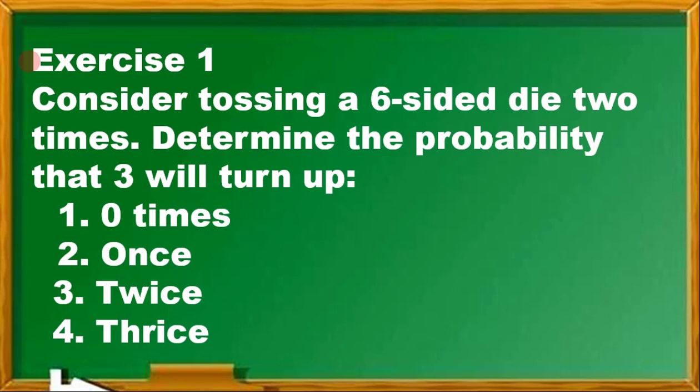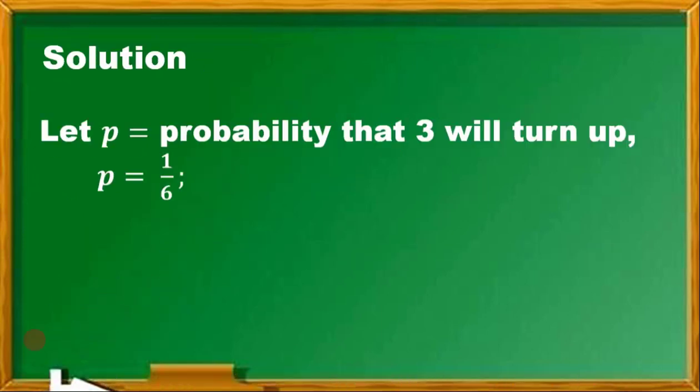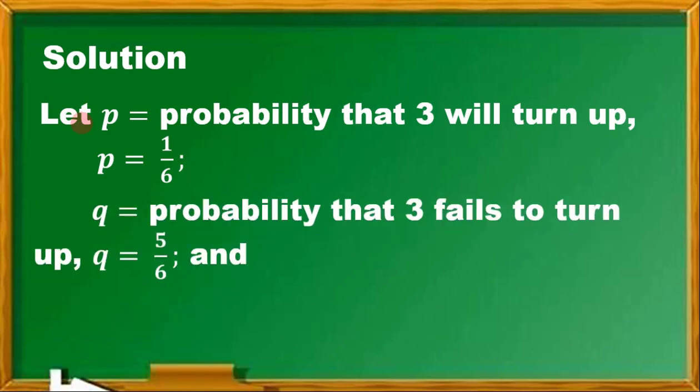For exercise number 1, consider tossing a six-sided die two times. Determine the probability that a 3 will turn up. To solve numbers 1 to 4, we have to identify first the probability of success and failure. Since it is a six-sided die and 3 will turn up, there are six possible outcomes. The probability that 3 will turn up is 1 out of 6, and the probability that 3 will not turn up is 5 out of 6. And we have N equals 2 tosses.